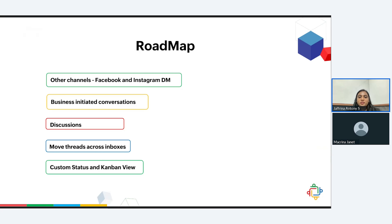We have now come to the end of our session, but before we end, let us quickly show you our roadmap. When we first launched Zoho Team Inbox, we introduced the email channels incorporating the ever-needed collaboration features in them. We then introduced the personal inboxes within Team Inbox so that you don't have to use another platform to access personal emails. Now with the same intent, we've introduced Telegram and WhatsApp channels. There are a lot more useful channels that we are working on.